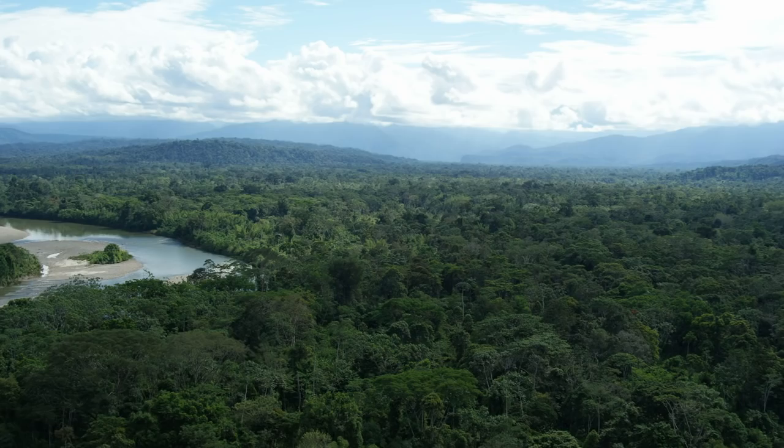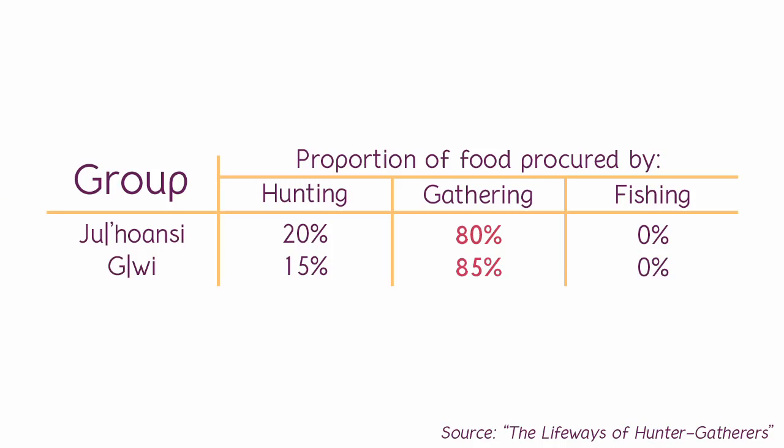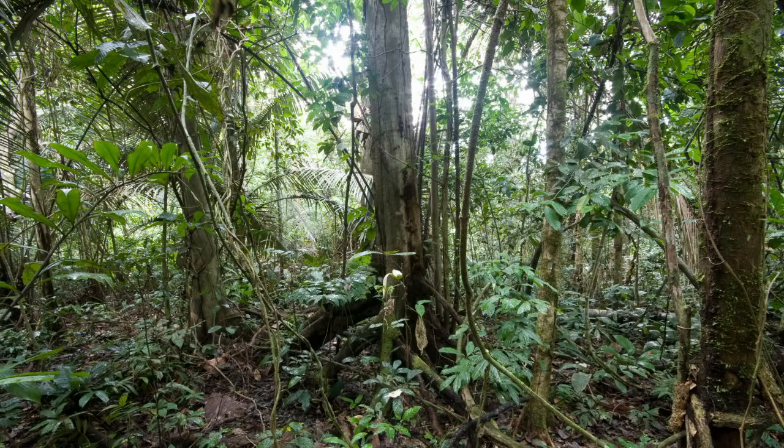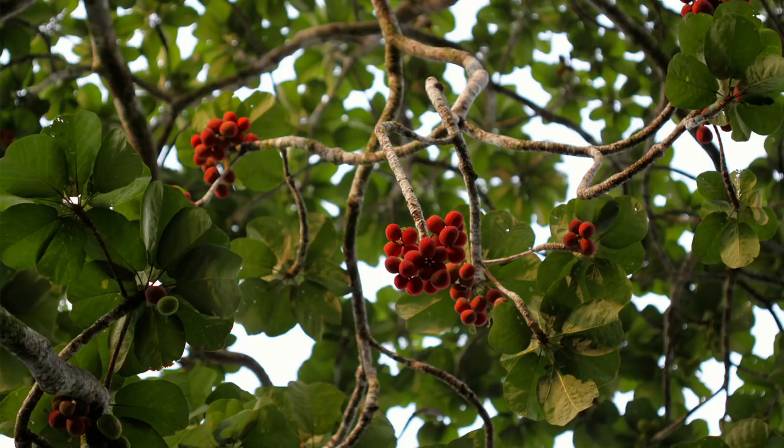In tropical forests, plants put a lot of their energy into growing the largely inedible stems and leaves, and fruit grows high up in the canopy and can be hard to reach. So the proportion of gathered food is lower, while hunting and fishing have to compensate.